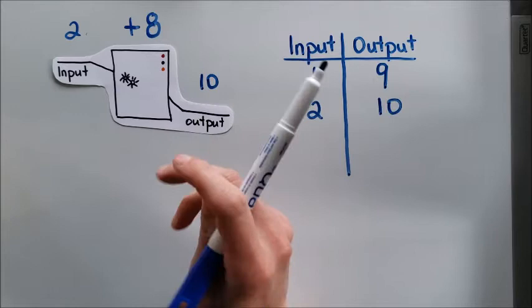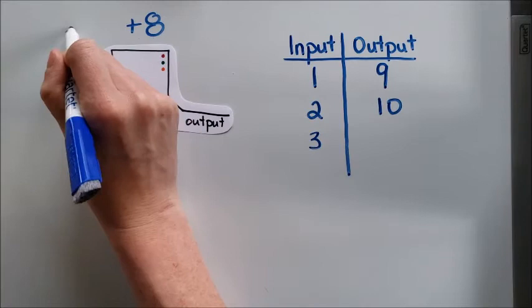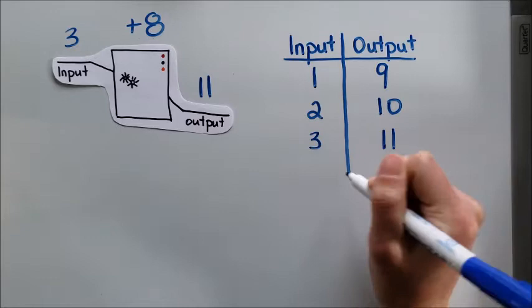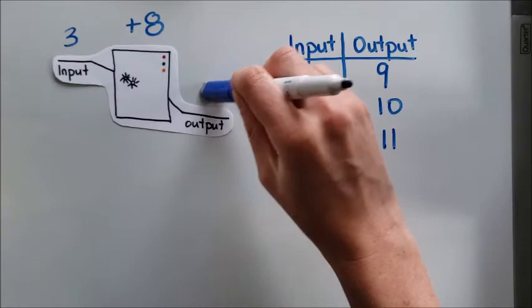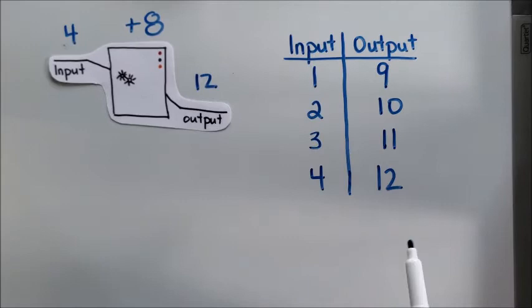I can continue this on and I can put really any number that I would like into here. So if I put in three and I add eight, I'm going to get to eleven. And if I put in four plus eight, it's going to output twelve.